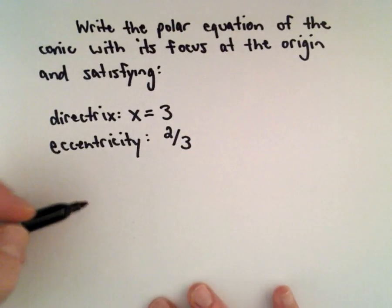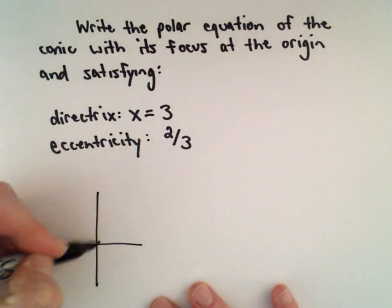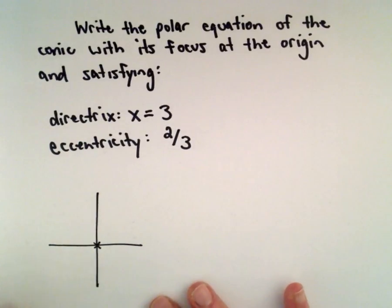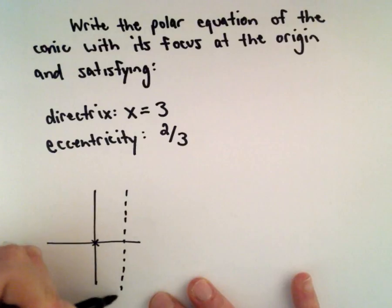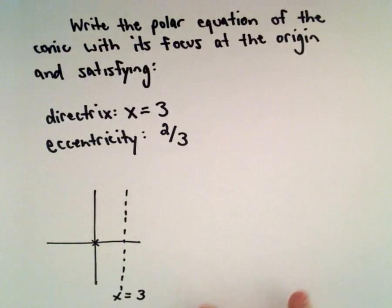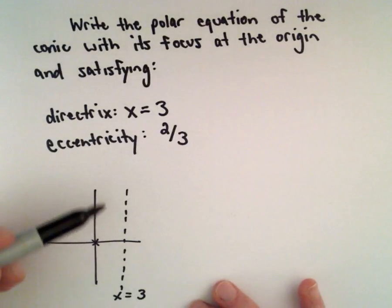I'm just going to make a quick little sketch here. So the focus, I'll make a little x there at the origin. The directrix is the line x equals 3. So there's the directrix, the line x equals 3.